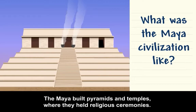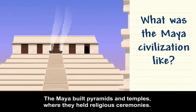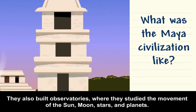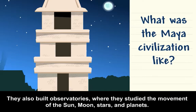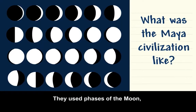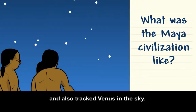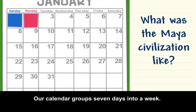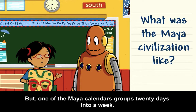The Maya built pyramids and temples where they held religious ceremonies. They also built observatories where they studied the movement of the sun, moon, stars, and planets. The Maya used the heavenly bodies to organize and track time. They used phases of the moon and also tracked Venus in the sky. Our calendar groups seven days into a week, but one of the Maya calendars groups 20 days into a week.